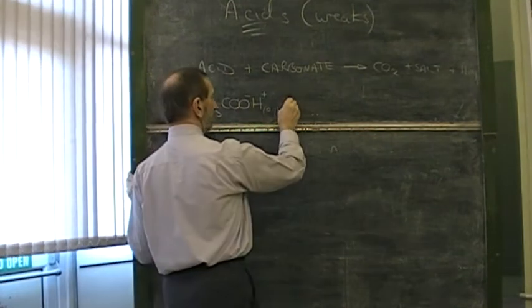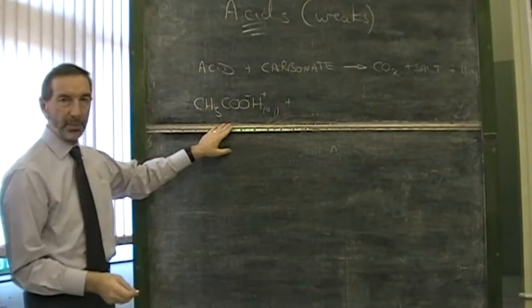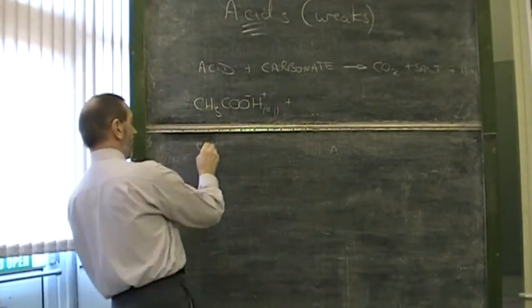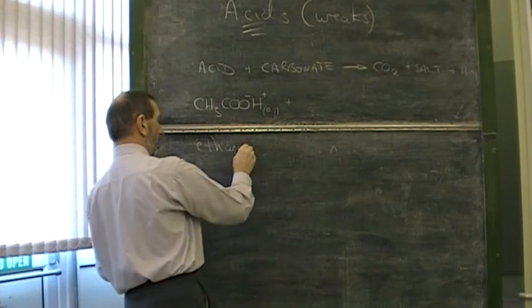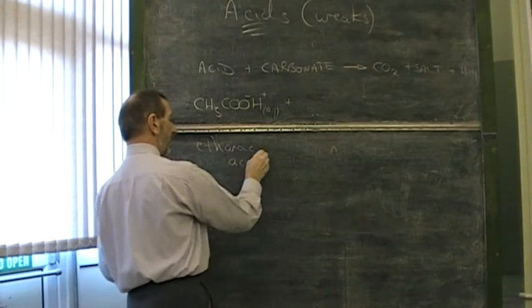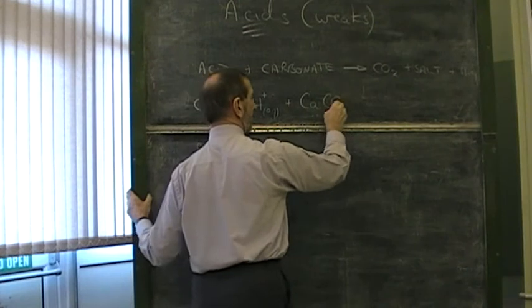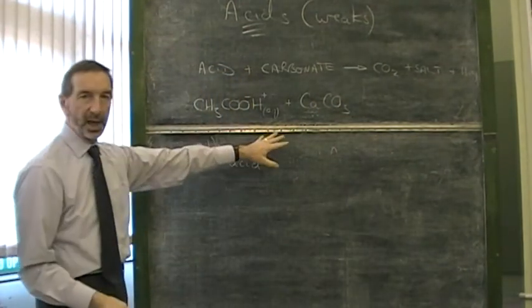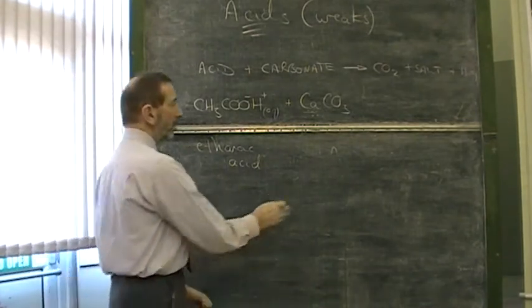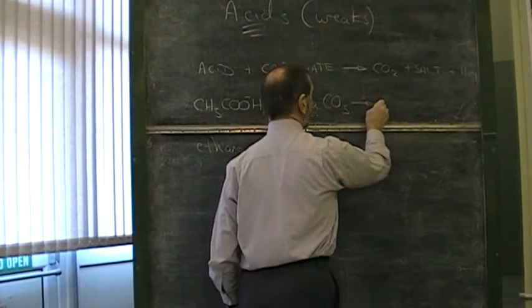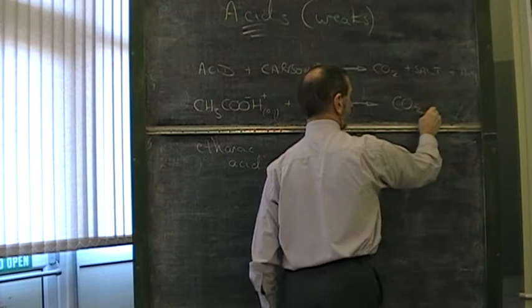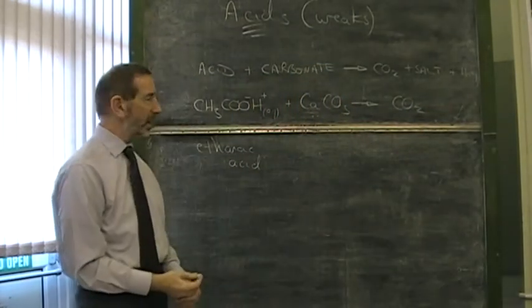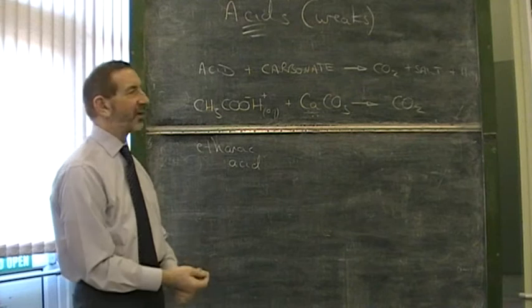Let's take a carbonate. There's the best known carboxylic acid. Ethanoic acid. And, the best known carbonate is probably calcium carbonate. Calcium carbonate. If you were to add these together, what would happen? Well, we would see carbon dioxide produced. It wouldn't be produced very quickly, because this is a weak acid, but it would be produced, nevertheless.